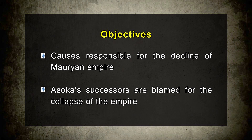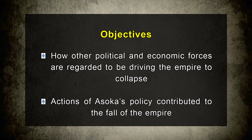The objectives are: to know about the causes responsible for the decline of the Mauryan Empire; to what extent Ashoka's successors are blamed for the collapse of the empire; how other political and economic forces are regarded as driving the empire to collapse; and finally, to what extent the actions of Ashoka's policy contributed to the fall of the empire.